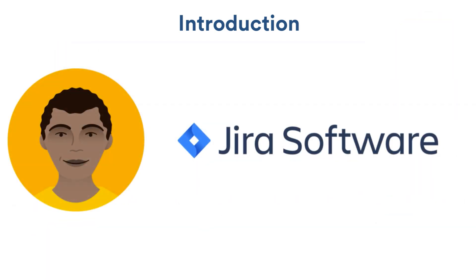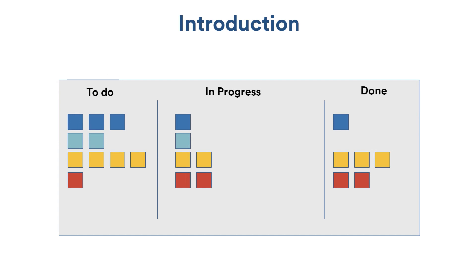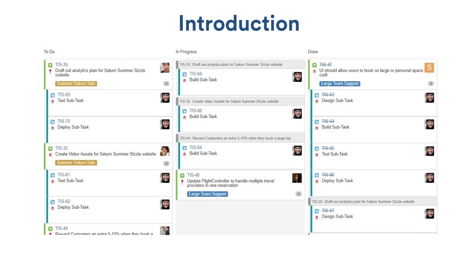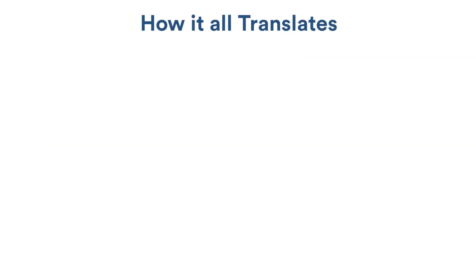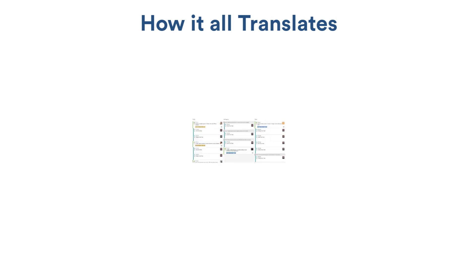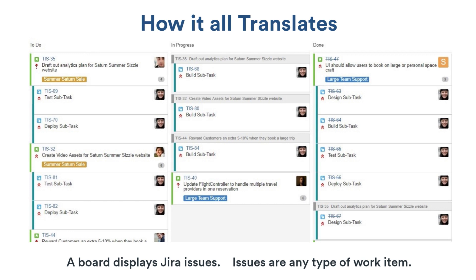What I'm attempting to express here is that Jira software is what that process with the poster boards and post-it notes looks like as an application. Jira software is used to manage software development. The poster board that the team used to track their to-do items becomes either a scrum board or a Kanban board in Jira software.